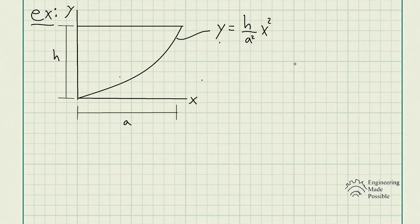For this example, we have the problem statement: locate the centroid x-bar of the parabolic area. So we have this parabolic area within this region, and we have the equation y equals h divided by a squared times x squared. And we have the dimensions a for the x-axis and the dimension h for the y-axis.